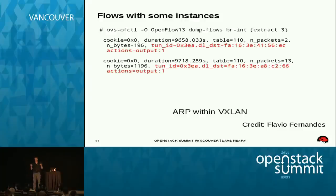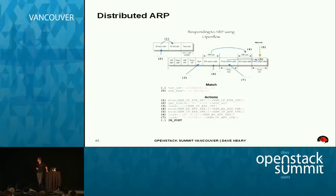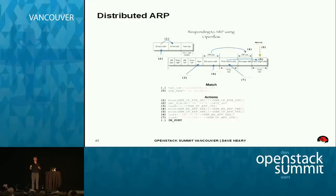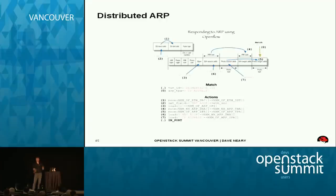One of the cool features is distributed ARP — you don't get any ARP traffic on the backplane. Because every compute node has a complete ARP table of your network, whenever an ARP request comes in on any port, the node knows where that host is. Using Open Flow tables, you swap fields around: move field 1 to field 2, field 3 to field 4, set values in fields 1 and 3, and send the packet back on the same port it came in from. That's quite neat.